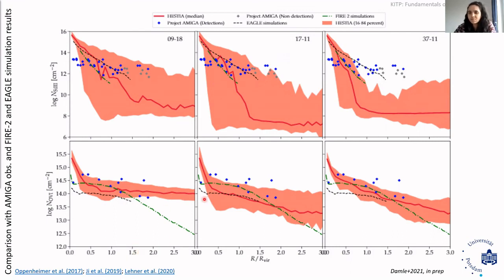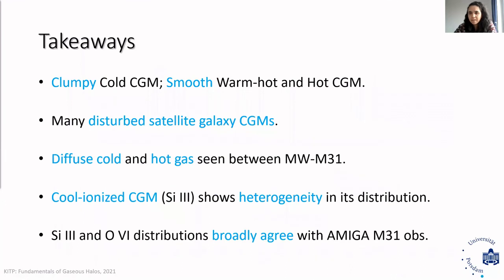However, beyond the 1.5 virial radius mark, our OVI does not drop at all. This could be because in our wider maps, M31 encounters the Milky Way in its path at large virial radii. With that, I leave you all with a few key takeaways. Thanks for listening and stay tuned for more results in our upcoming paper.